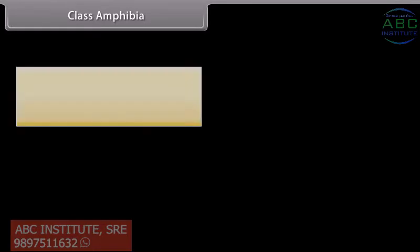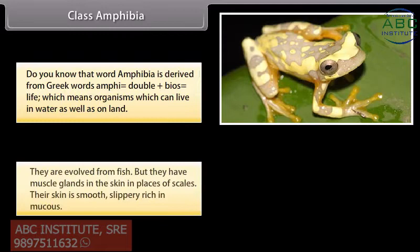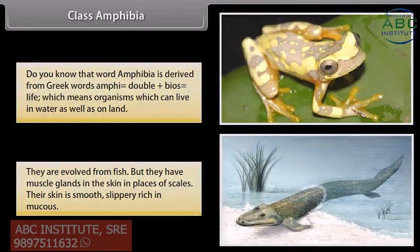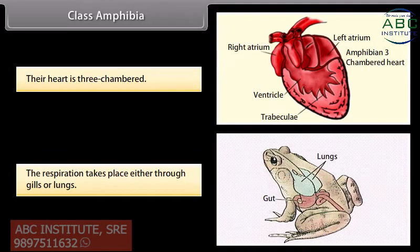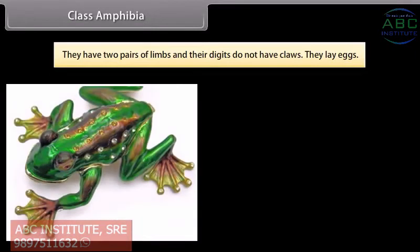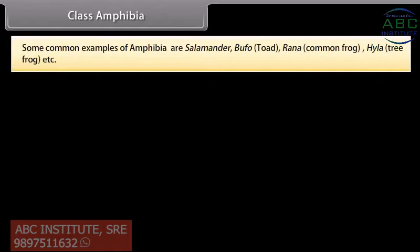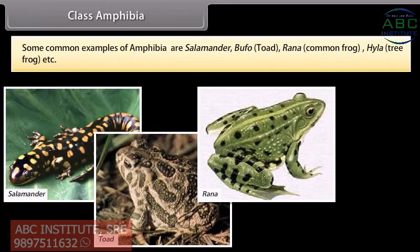Class Amphibia. The word Amphibia is derived from Greek words 'amphi' meaning double, plus 'bios' meaning life, which means organisms that can live in water as well as on land. They are evolved from fish but have mucus glands in the skin instead of scales. Their skin is smooth, slippery and rich in mucus. Their heart is three-chambered. Respiration takes place either through gills or lungs. They have two pairs of limbs and their digits do not have claws. They lay eggs. Common examples are Salamander, Bufo (toad), Rana (common frog) and Hyla (tree frog).